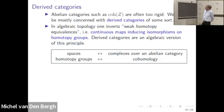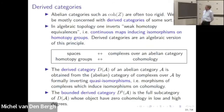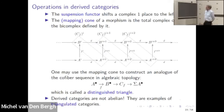For the derived category, we just translate this: instead of spaces, we work with complexes over an abelian category, and the homotopy groups are replaced by cohomology. We formally invert morphisms which induce isomorphisms on cohomology. As Sasha was saying, we will mostly be interested in a subcategory of the full derived category, namely objects which have zero cohomology in low and high degree. The derived category is not abelian — the category of complexes is abelian, but kernels and co-kernels do not survive this inverting of quasi-isomorphisms.